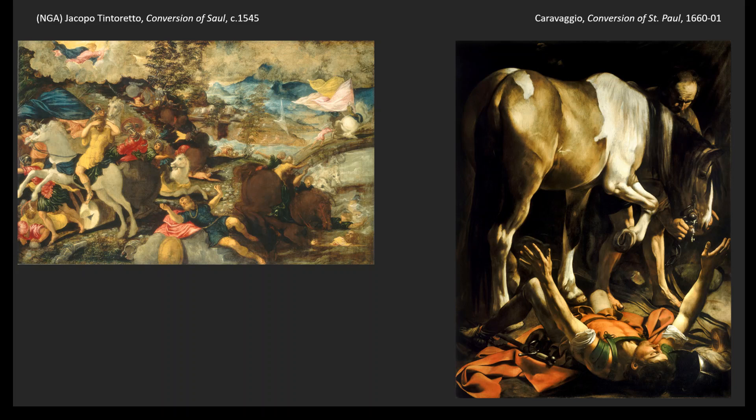When we last had lecture, we were talking about mannerism — the breakdown of the ideals of the Italian Renaissance. What we saw with people like Raphael, Michelangelo, Leonardo was stability, symmetry, and perfect harmony. Leonardo's a little weird with that. Titian and Giorgione, because of Venice, they're a little strange as well.